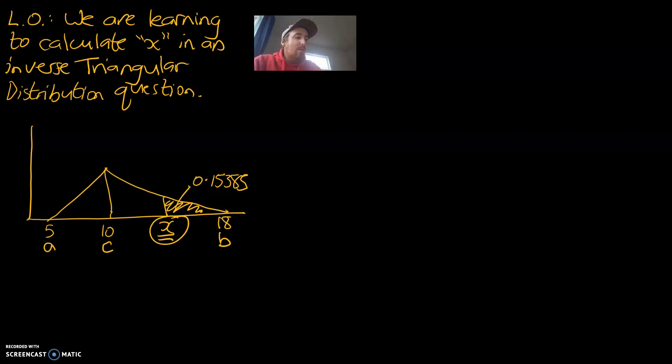We're going to get into this straight away. Like any question for triangular, the probability is always equal to one-half of base times height. And we're going to start inputting the things that we know. We know our probability that was given to us in our question. That's 0.15385. We're going to times it by one-half.